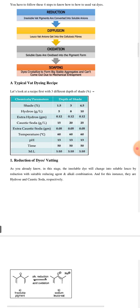A typical vat dyeing recipe is given below, and it is in comparison with three different depths of shade. For example, if the shade depth is 1.5%, then hydrosulfite used would be 5 grams per liter, extra hydrosulfite used would be 0.12 grams per meter, caustic soda used would be 15 grams per liter, extra caustic soda used would be 0.05 grams per meter, temperature would be 60 degrees, pH would be 13, time would be 50, and material to liquor ratio would be 1:10.